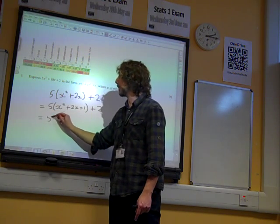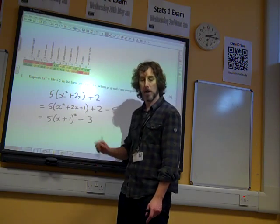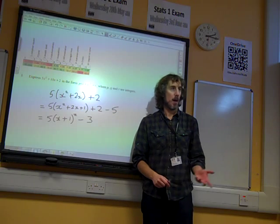So we're going to have to take away the 5. And so the answer that we were looking for was 5, brackets, x plus 1, all squared, minus 3. There it was, and that was it.